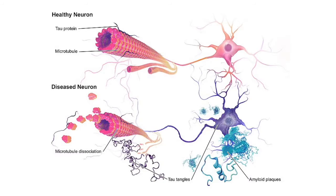This slide summarizes what happens in the brain of someone with Alzheimer's disease. Here we have a healthy neuron — we see the tau proteins attached to the microtubules, all nicely arranged and stabilized, with no amyloid plaques outside. In a diseased neuron with Alzheimer's disease, the tau proteins are detaching, tau tangles are forming, the microtubule essentially falls apart, and outside the neuron we have beta-amyloid plaques disrupting synaptic transmission.